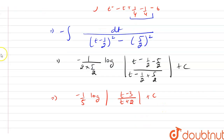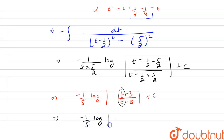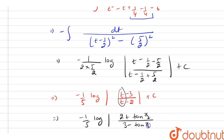Let me correct a small mistake in the previous step — it should be (t - 2) in the numerator. After substituting back t = tan(x/2), the final answer is minus (1/5) log |(2 + tan(x/2)) divided by (3 - tan(x/2))| plus C. And from here we can see that this is our final answer.